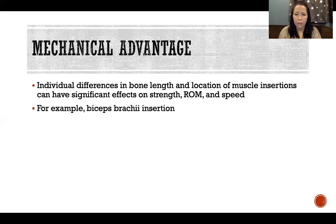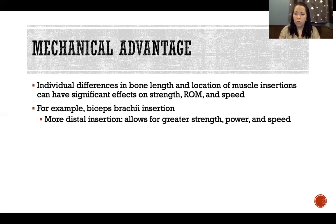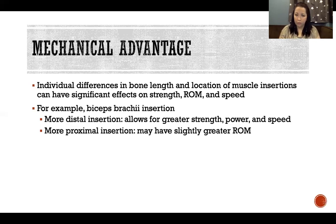For example, consider biceps brachii insertion. If someone has a more distal insertion compared to an average person, that gives them more strength, power, and speed, because they have a longer effort arm and a slightly greater advantage. A more proximal insertion may provide slightly greater range of motion — though it lessens strength, power, and speed, it allows for greater muscle excursion, meaning greater length and space that the muscle is able to move through.